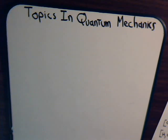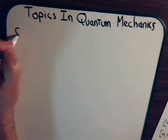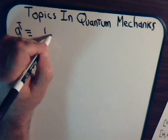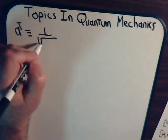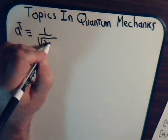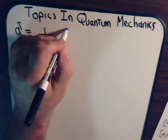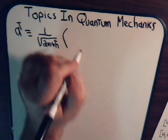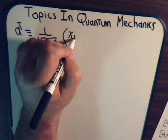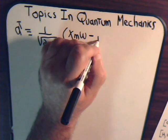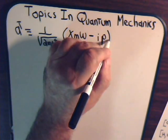First, we have a dagger, from our definition, 1 over the square root of 2m omega h-bar. And here we have xm omega minus i p.